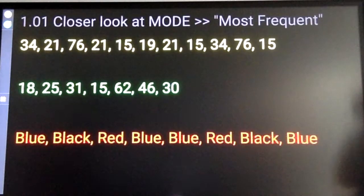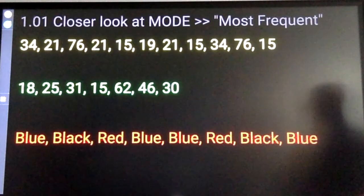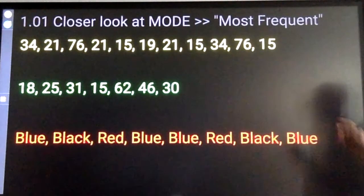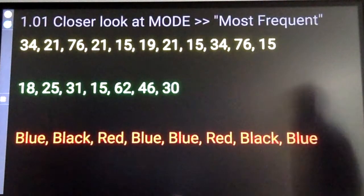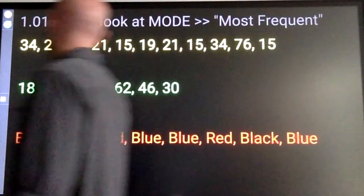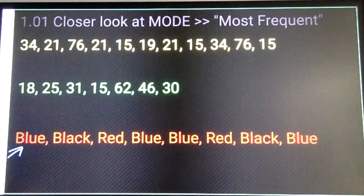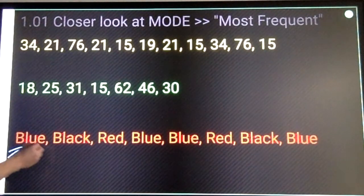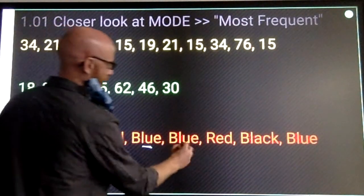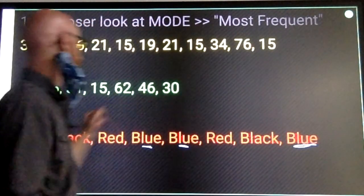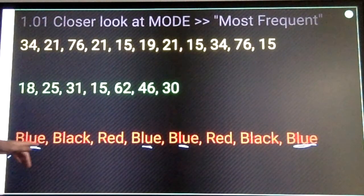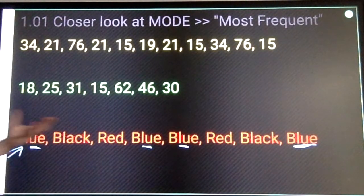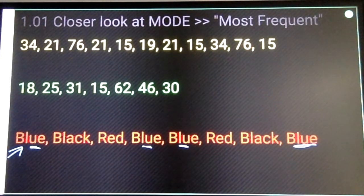Closer look at mode, most frequent. Mode is the only measure of center that we can use with categorical data. This stuff down here. Blue is going to be my mode. Blue shows up most often. One, two, three, four times. Notice, even though red repeats, it doesn't repeat as many times as blue, so it's not the mode. Mode is what shows up most frequently. Blue is the mode.